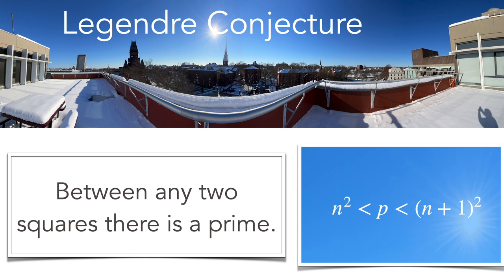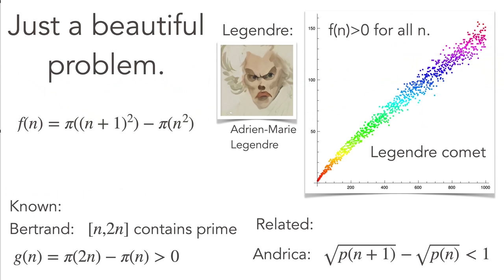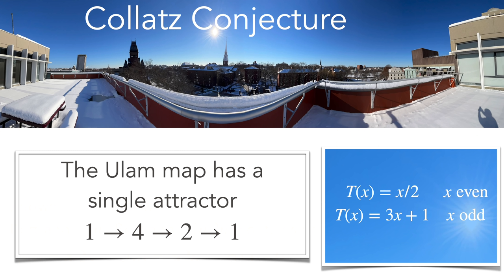The Legendre conjecture is also one of the Landau problems. The four Landau problems asks whether there's a prime between any two adjacent squares. Beautiful problem by Legendre. We don't have a picture of Legendre, only a caricature of Adrien-Marie Legendre. We see here the Legendre comet which tells how many primes there are between adjacent squares. There are related conjectures. Bertrand's conjecture has been proven a long time ago, between n and 2n there are always primes.